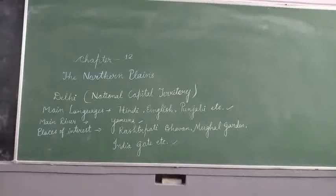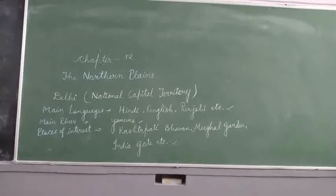Rajghat is the Samadhi of the father of the nation, Mahatma Gandhi. Shantivan is the Samadhi of Jawaharlal Nehru. Vijay Ghat is the Samadhi of Lal Bahadur Shastri.